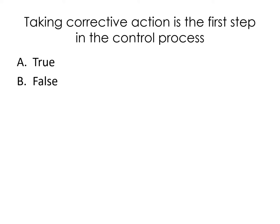Review question: Taking corrective action is the first step in the control process — true or false? The answer is false. Corrective action is the last step. The first step is to set the standard, so you know what you're comparing everything to. Making corrections is the very last step.